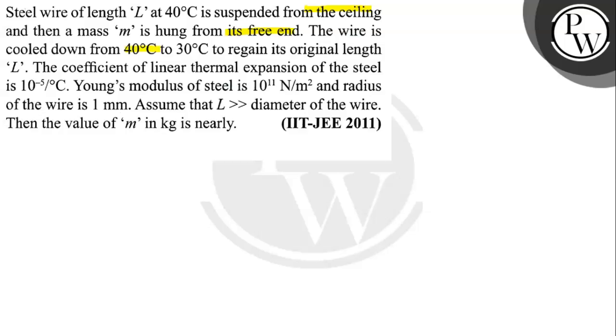The wire is cooled down from 40°C to 30°C to regain its original length L. The coefficient of linear thermal expansion of steel is 10^-5 per °C.